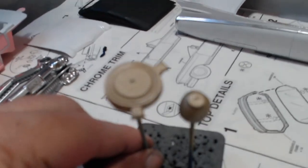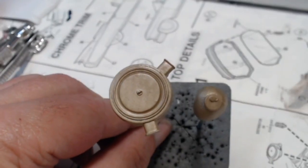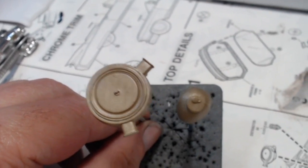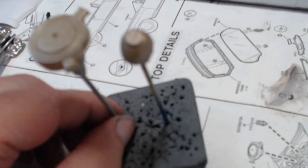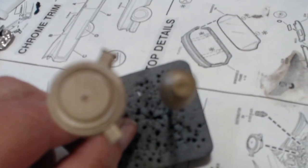There's your air filter and the top of the washer bottle. So that's that.